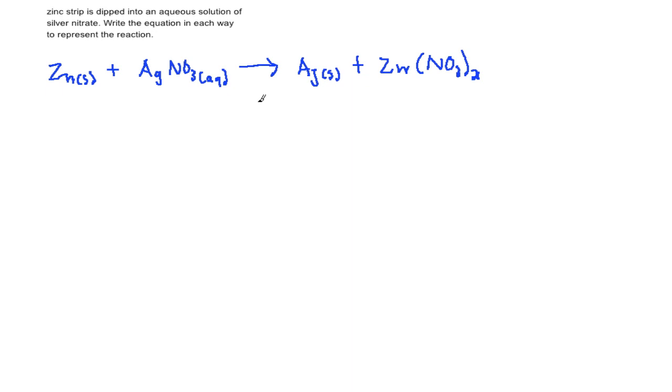So the next step is to balance the chemical equation. So we have one zinc, one zinc, one Ag, one Ag, so that's fine. However here we have one nitrogen, but we have two nitrogen here, so we need to balance it by putting the coefficient of 2 in front of AgNO3. So that balances the nitrogen, we have two nitrogens on the reactant side, and we have two nitrogen on the product side.